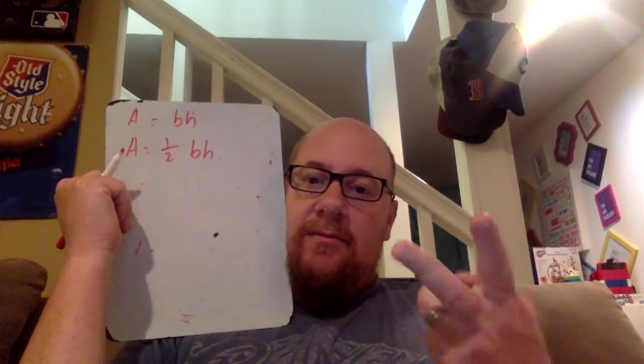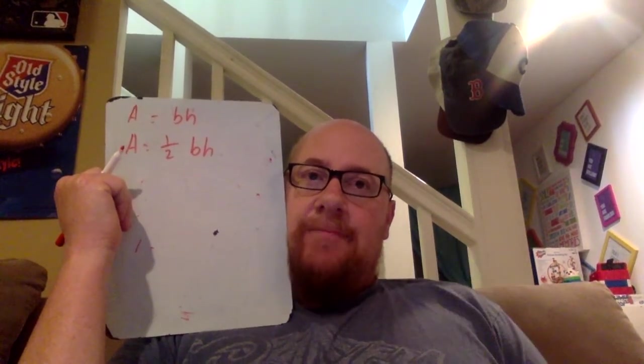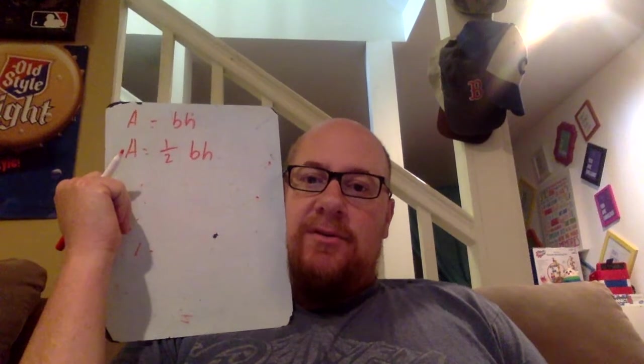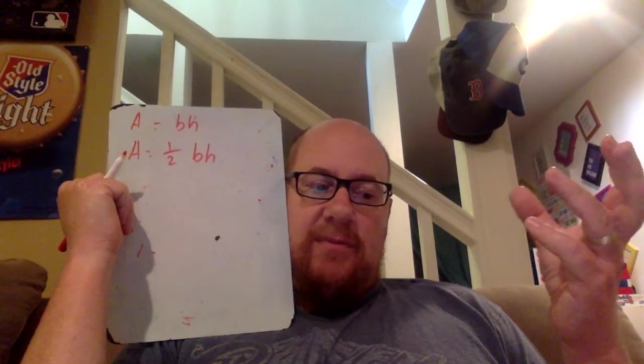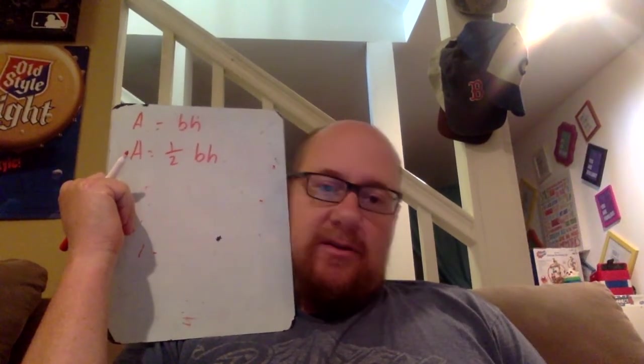You're either going to add them together or subtract. If you're missing that shape, you'll subtract. If you have two shapes added together, you're just going to find the total at the end.